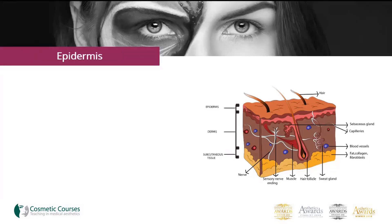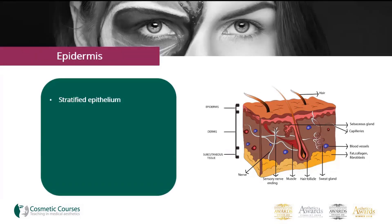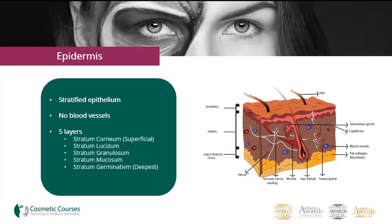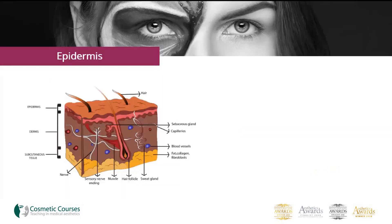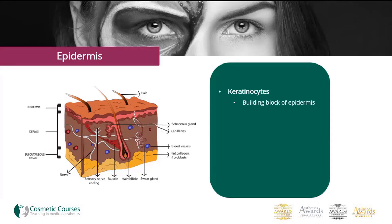The epidermis is made from stratified epithelium and contains no blood vessels. It is made up of five layers, which you can see here. It contains many cell types, including keratinocytes, which are the main building blocks of the epidermis, melanocytes, that produce melanin, and Langerhans cells, which are antigen-presenting cells.